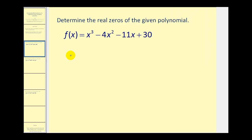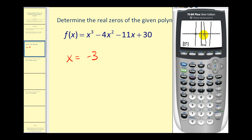So one of the zeros is x equals negative three. On the right we can determine the x-intercepts just by looking — it appears x equals two and x equals five. Instead of using the zero feature on the calculator, let's use the t-table this time.